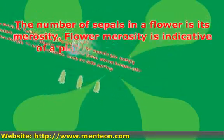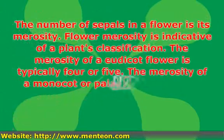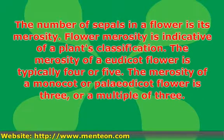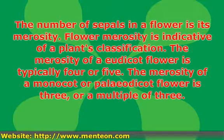The number of sepals in a flower is its merosity. Flower merosity is indicative of a plant's classification. The merosity of a eudicot flower is typically four or five. The merosity of a monocot or polycot flower is three, or a multiple of three.